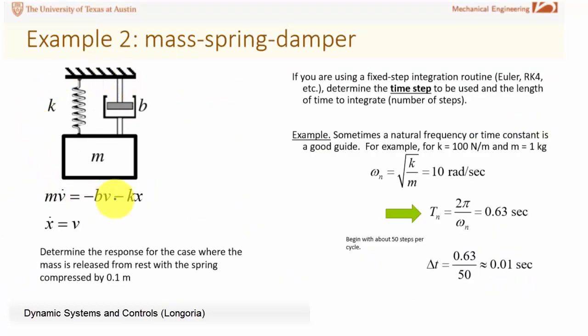For a second example I just chose a simple mass spring damper, very common. There's no force here, what I'm going to do is pull, give this an initial condition and release it and watch the response. Again an exact solution exists for this but we want to just run a simulation. I want to determine the response for the case where the mass is released from rest with the spring compressed. If you're using a fixed step integrator you need to determine what time step to use. If you're using a variable step integrator all you do is say integrate from a certain initial time to final time.